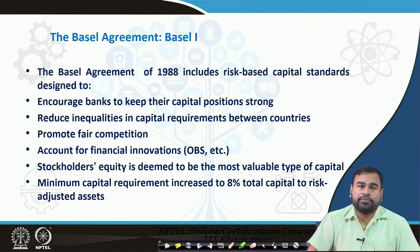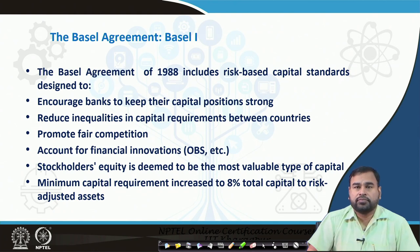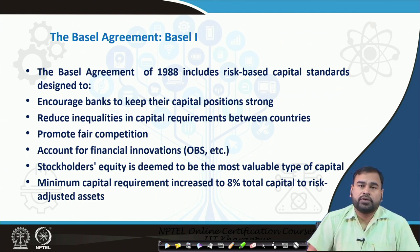It also helps to promote fair competition among different banks. Previously, we were only considering on-balance sheet items, but with the emergence of the Basel norm, the importance of off-balance sheet items also increased. According to the Basel norm, off-balance sheet items should also be considered when talking about assets and risk-weighted assets.